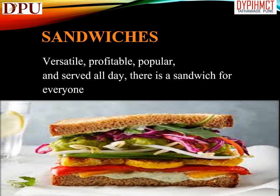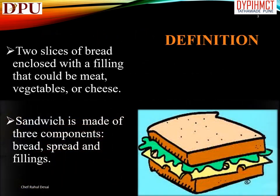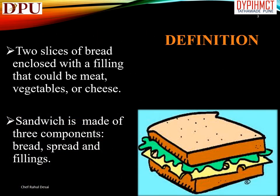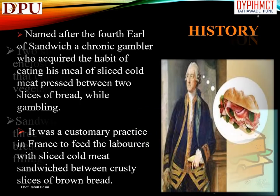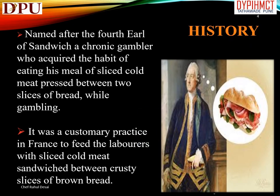There is a sandwich for everyone — two slices of bread enclosed with a filling that could be meat, vegetables, or cheese. A sandwich is made of three components: bread, spread, and fillings. The sandwich is named after the fourth Earl of Sandwich, a chronic gambler who acquired the habit of eating sliced cold meat pressed between two slices of bread while gambling.